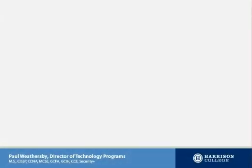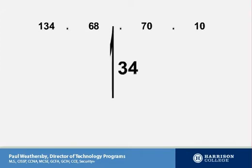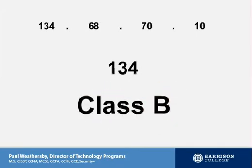Now that I understand classful boundaries a bit better, any time I'm given an address — for instance, 134.68.70.10 — I always want to identify what class I'm in. In this case, since the first octet is 134, I would be in a Class B network.